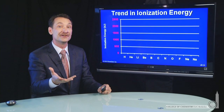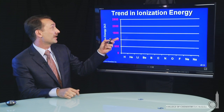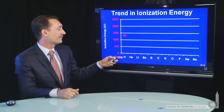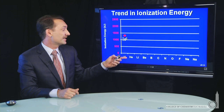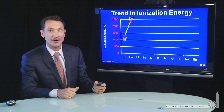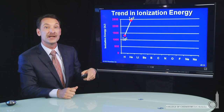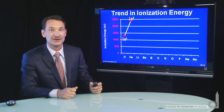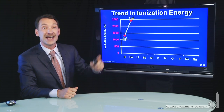We notice that the trend in ionization energies is to increase across a row in the periodic table. If I plot ionization energy versus atomic number, I'll see that for hydrogen, we saw 1312 kilojoules per mole — that's a 1s electron. For helium, about 2400 kilojoules per mole. So we see the difference between a 1s electron with one positive charge in the nucleus and 1s electrons with two positive charges in the nucleus.